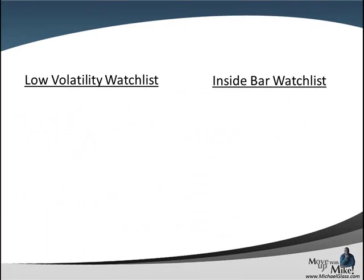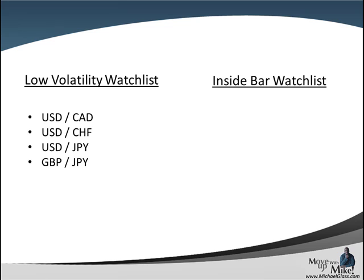Usually when we have light volume, we're going to get some low volatility candidates. We have the dollar Canadian, the dollar franc, the dollar yen, and the pound yen. We're watching the Bollinger Bands — standard two deviation on a one-hour time frame — watching for a breakout of the consolidation when traders return. For our inside bar watch list, we're watching the Aussie dollar, the dollar franc, and the dollar yen. You mark the high and low of Monday's trading range and want to trade a breakout of that range, with your own confirmation.